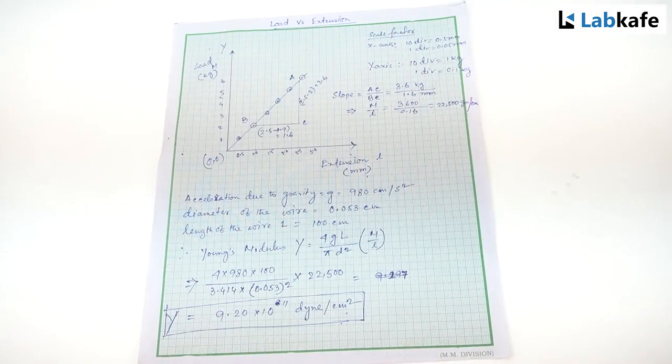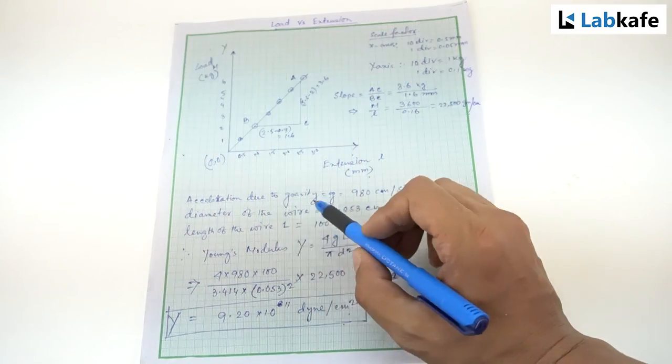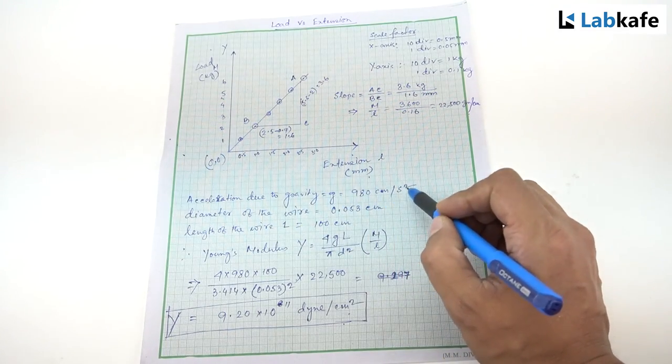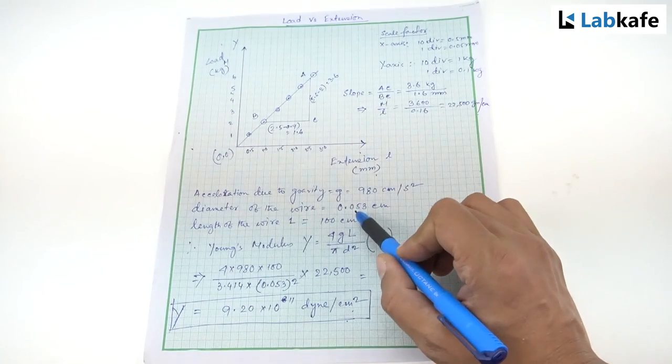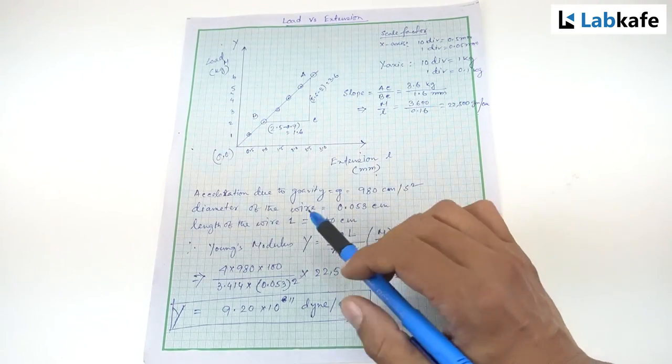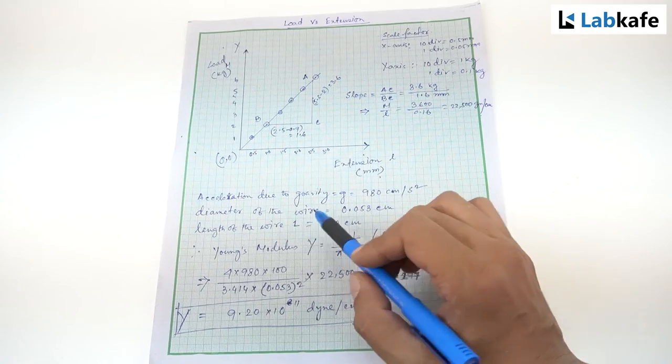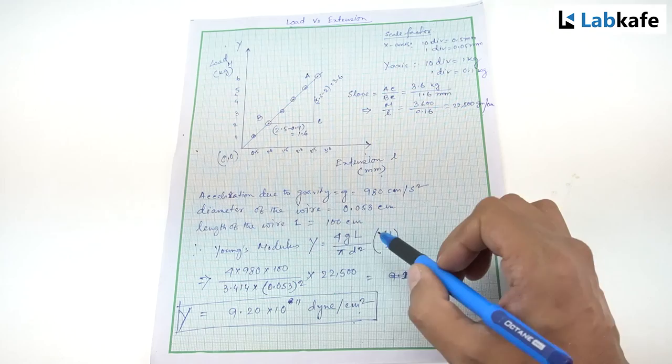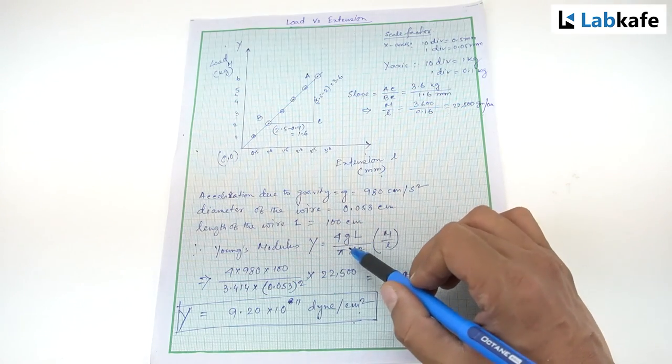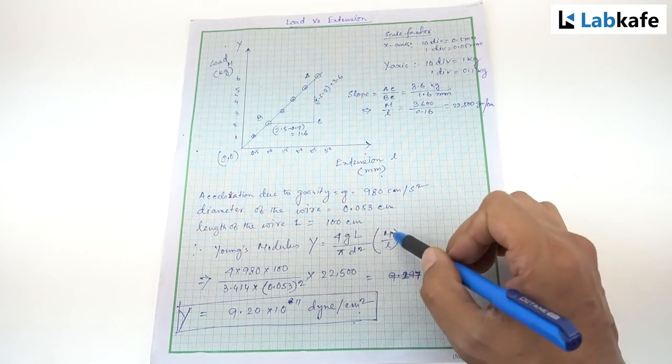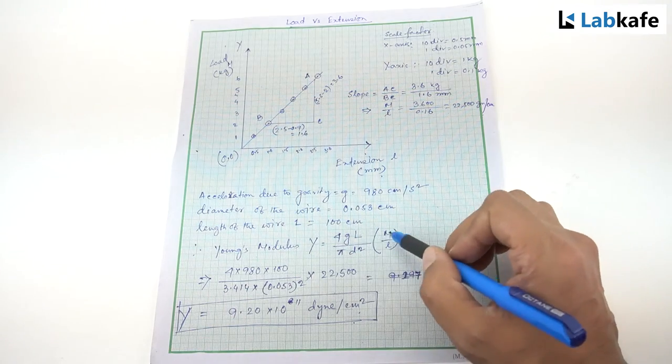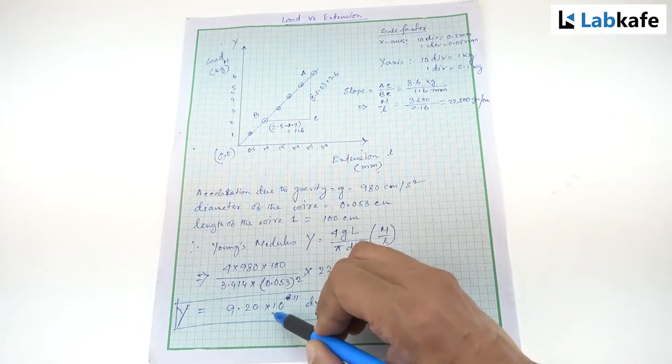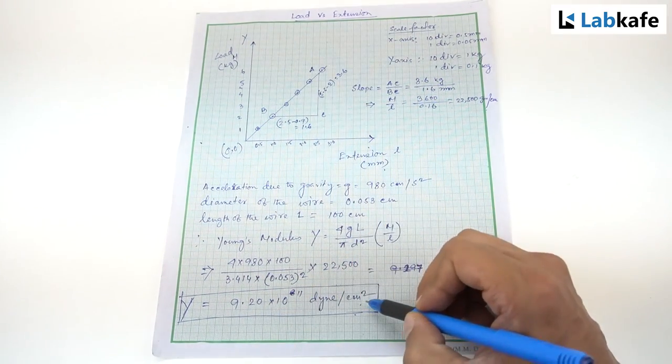To find the Young's modulus, we know the acceleration due to gravity g is 980 cm per second squared. The mean diameter of the wire is 0.053 cm. The length of the wire L equals 100 cm. Therefore, Young's modulus Y equals 4gL by pi d squared into M by l. This is the slope. After putting the value, we get 9.20 into 10 to the power 11 dyne per centimeter squared.